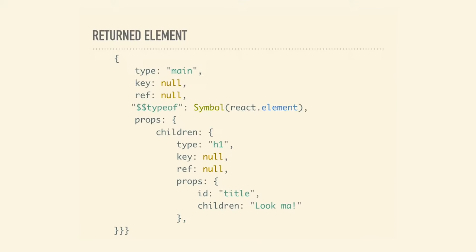The meat of an element is the props — everything you're accustomed to when creating a component. In our case we only had one prop: an H1 with an ID of 'title' and children of the text string 'Look, ma.' Children can be an object or an array — if you have multiple children, it'll be an array of those objects. What React does is build up a whole tree of these from every component. This is what the render function will ultimately return.